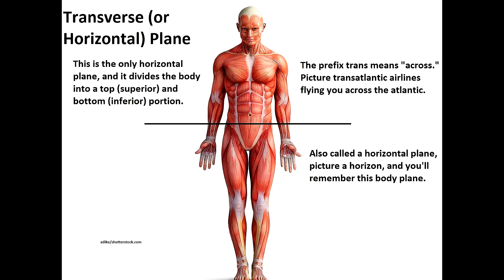Next, we have the transverse plane, also called a horizontal plane. This is easy to remember because it is the only plane that runs horizontally, dividing the body or structure into a top (superior) and a bottom (inferior) half. To remember, let the name help you out — the prefix 'trans' means across. Think of transatlantic airlines flying you across the Atlantic.